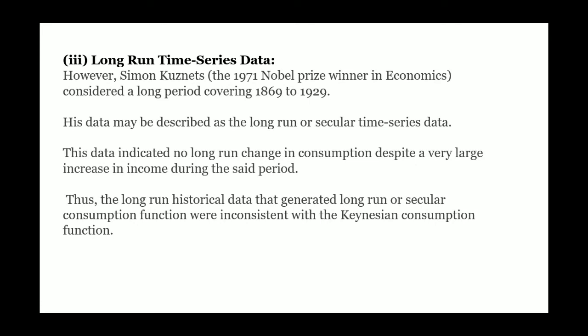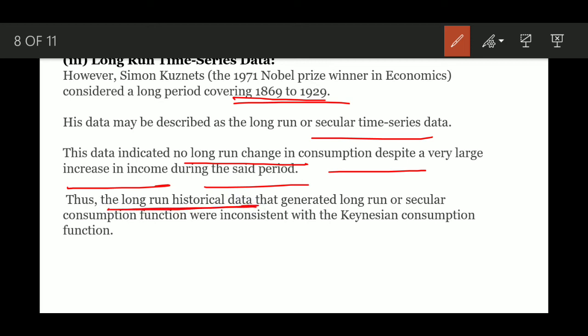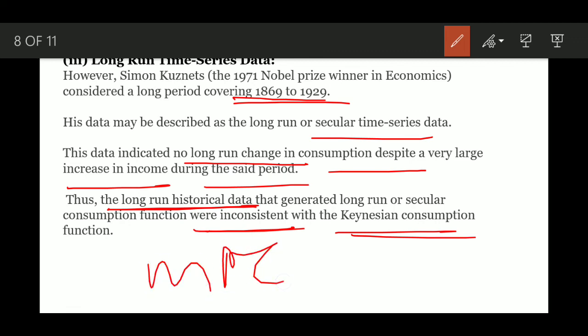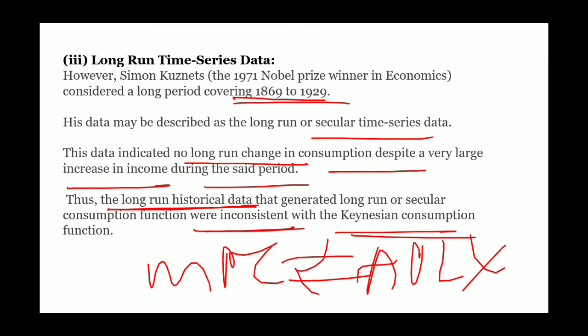Simon Kuznets was the first to challenge the Absolute Income Hypothesis. Kuznets, a Nobel laureate in 1971, collected long-run data from 1869 to 1929 — described as long-run secular time series data. Despite a large increase in income over this period, the long-run historical data showed that MPC is not less than APC as Keynes claimed. Kuznets proved that MPC equals APC in the long run, while in the short run it holds as Keynes said.